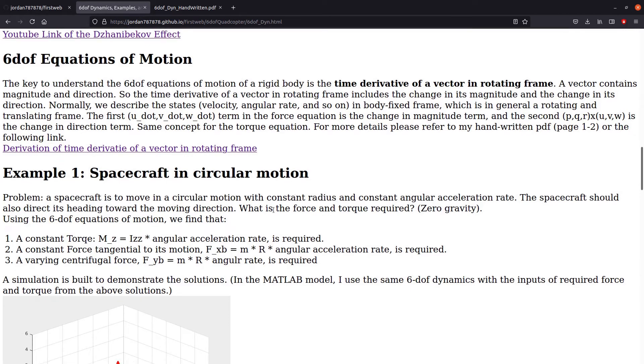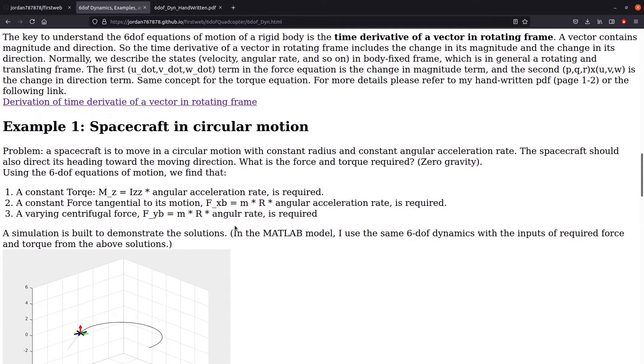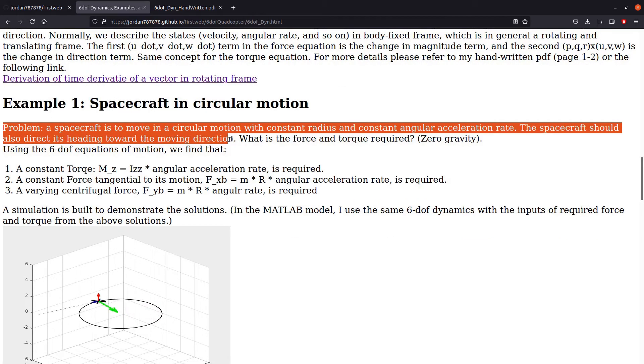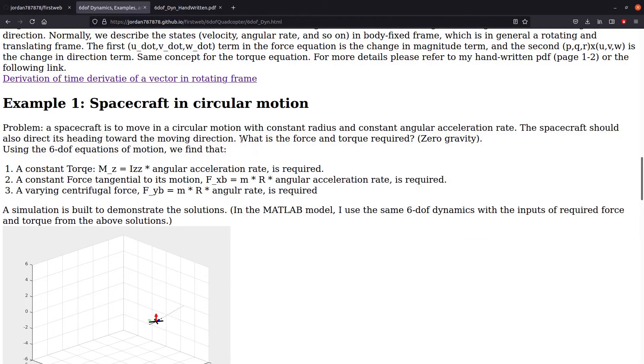Then, let's try to analyze and solve a simple example, which is a spacecraft going in a circular motion. This is the description of the problem. And we want to solve for the force and torque required for this kind of motion. Using the 6DOF equations of motion, we can find the solution.